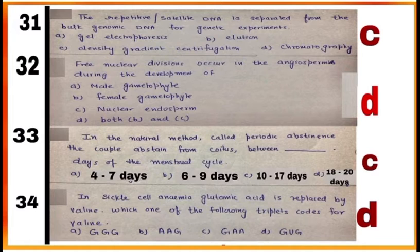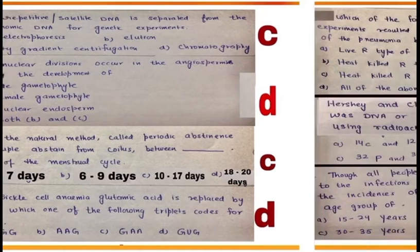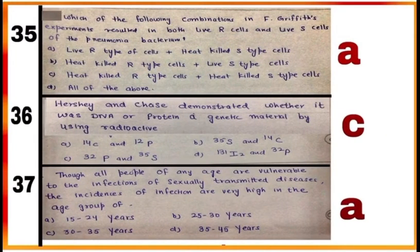Question 31 to question 34: read them and solve them carefully. Next, question 35 to question number 37: learn observations and results of all experiments done by various scientists which are given in chapter number 6.